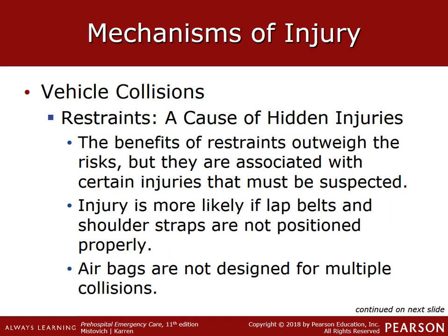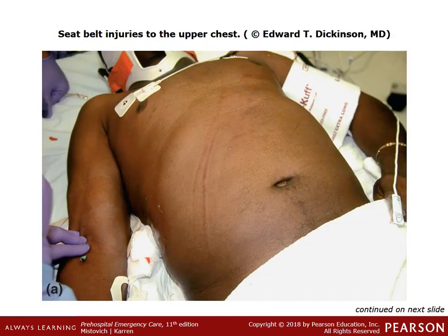Lap belts, when worn properly, distribute force across the iliac crest of the pelvis and prevent the occupant from being ejected. But without a shoulder strap, a lap belt does not prevent the chest from striking the steering wheel. Compression fractures of the lumbar spine can occur as the torso is forcibly flexed forward. If the seat belt is worn too low, it can dislocate the hips. For those who put the lap belt on but throw the shoulder belt behind their head — your hips may be safe, but the heaviest portion of your body will be propelled forward into the steering wheel.